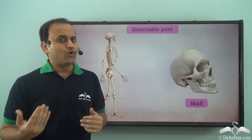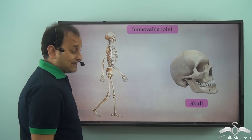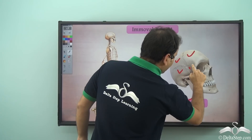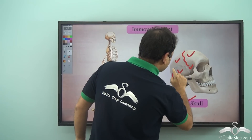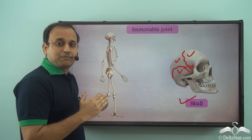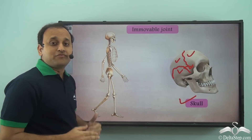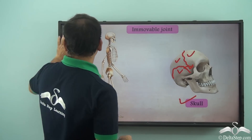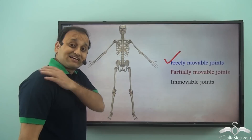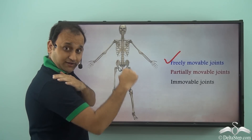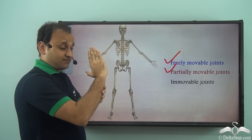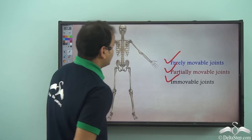Immovable joints don't move at all. A very common example is the skull. In the case of the skull, these different pieces are joined together — you can see the joints — and all these joints are immovable. They are fixed at their place. Such joints are immovable joints which do not show any sort of movement. So in our body we have freely movable joints, partially movable joints, and immovable joints which are on our skull.